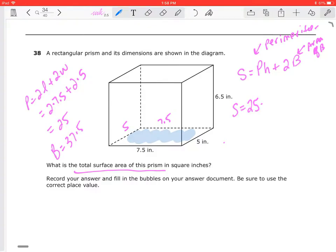Now, I'm going to plug this all in. So S is equal to my perimeter, which is 25, times 6.5 plus 2 times 37.5. So I'm going to put everything in my calculator.